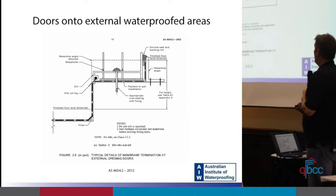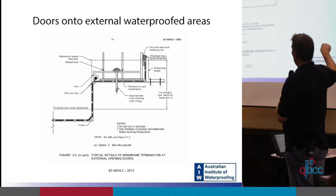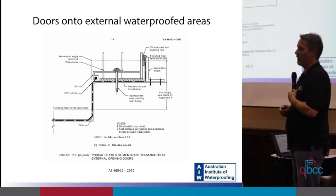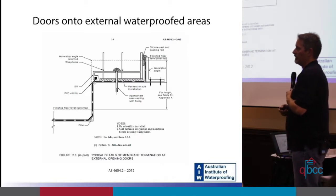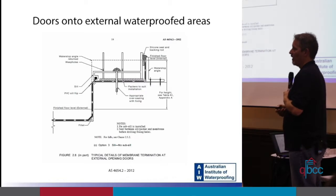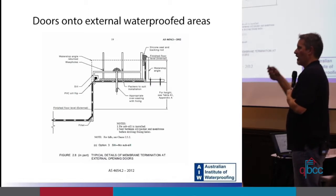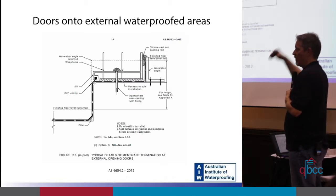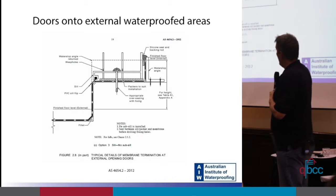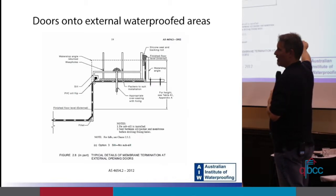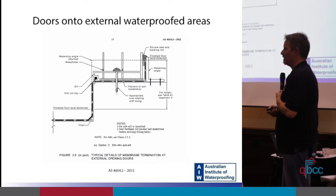Let's talk about doors onto external waterproofed areas. What the standard wants you to do is bring the membrane up the face, underneath the door, and then up the inside of a water stop angle. That angle has to go in before the door. I've maybe seen it done correctly twice in real life. On one job, the builder got the glazier to position the angle exactly where he wanted it, the waterproofer came in and detailed his membrane, then the glazier came back and put the doors in. It's very tricky to find the exact spot, but it has to go in. The water stop angle also needs to be returned on the side.